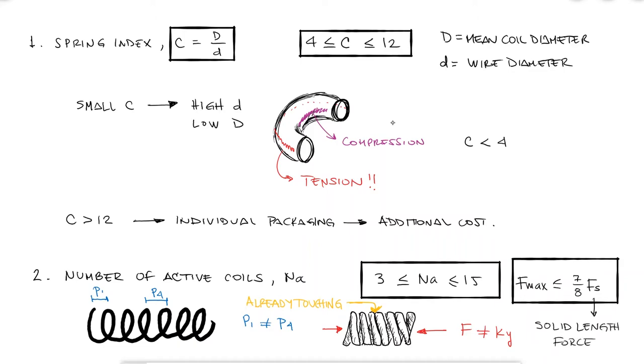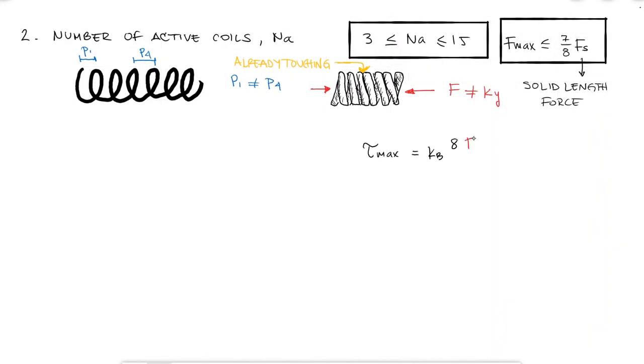Calculations are still performed to not overcome the shearing yield strength when a force to reach solid length is applied, but the spring's operating point should be confined to never surpass the 7 eighths of that force. The factor of safety to closure.